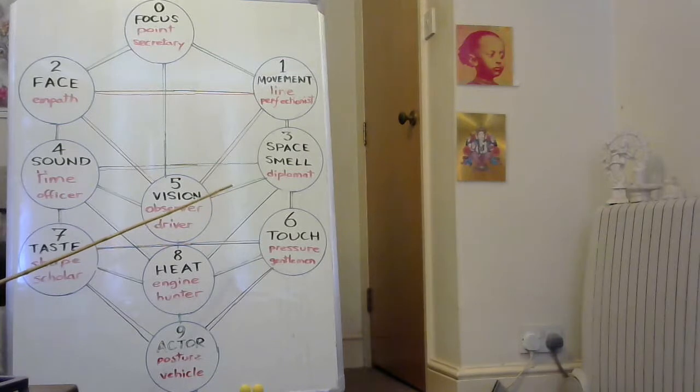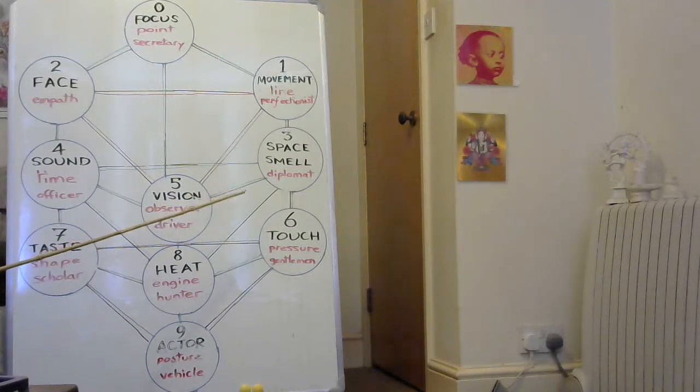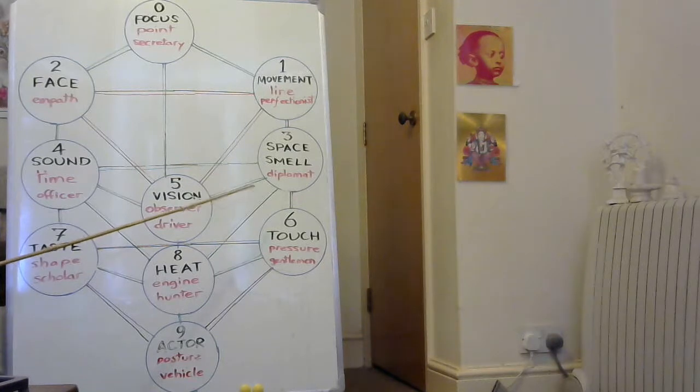31 is sensitivity, so we're sensitive to the environment, to the touch. 32 is the long enduring, putting up with, adapting to continuing circumstances.